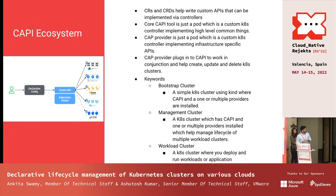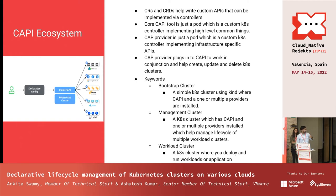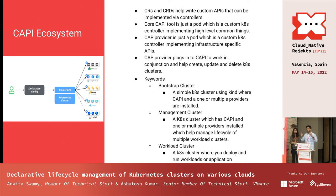This is the CAPI ecosystem. You have a declarative config — a YAML file — where you specify, for example, 'I want Kubernetes version X.Y.' You install the CAPI components on a Kubernetes cluster itself, do kubectl apply of that declarative config, and it provisions your Kubernetes cluster depending on the cloud you've asked for. There are two controllers: the core CAPI controller, and the provider controller.